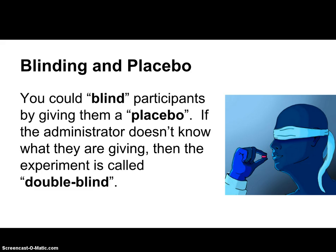A placebo is something we use a lot in drug trials, where we're going to give one group a drug and then give another group a pill that looks like the drug but is basically just a sugar pill. This allows us to blind our individuals so they don't know which one they're taking, and they might not have some mental bias as to whether or not they feel better. A double-blind study is one where the administrator doesn't even know what they're giving — the experimenter does, but the administrator doesn't — so that they don't have bias in who they're giving the treatment to.